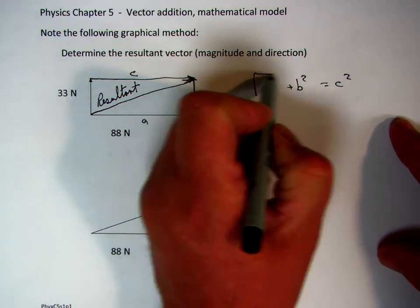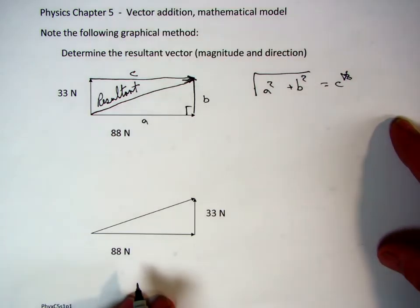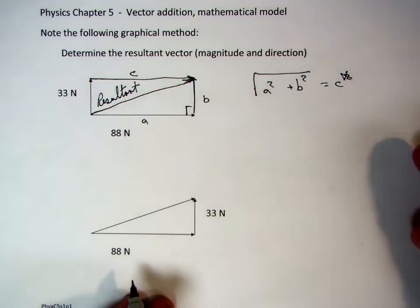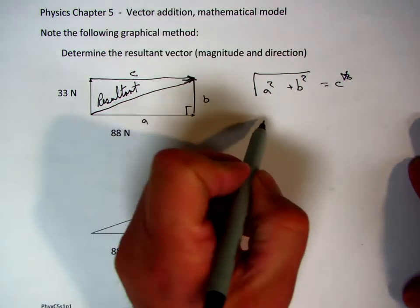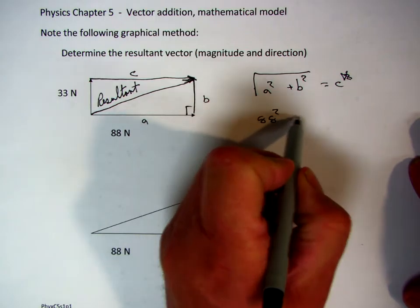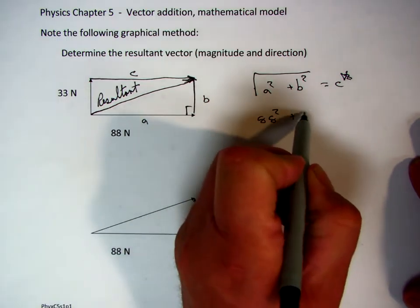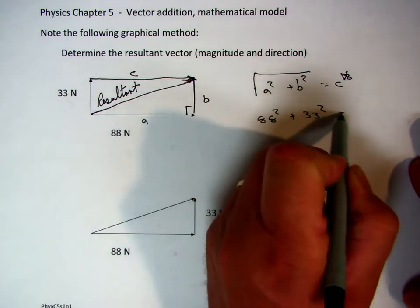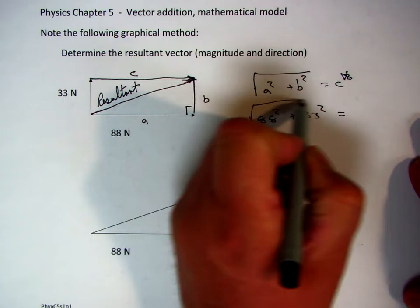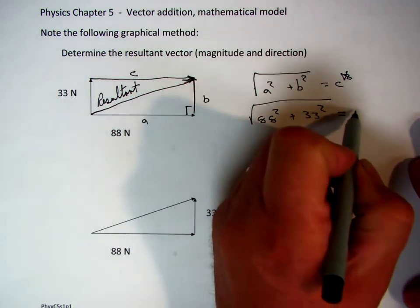So as we do that, we're going to take the square root of both sides, cancels the square from the right side. Now if I use the actual data that I have, a squared, 88 squared, plus b squared, 33 squared. If I take the square root of that, that's equal to the length of the side c, the resultant vector.